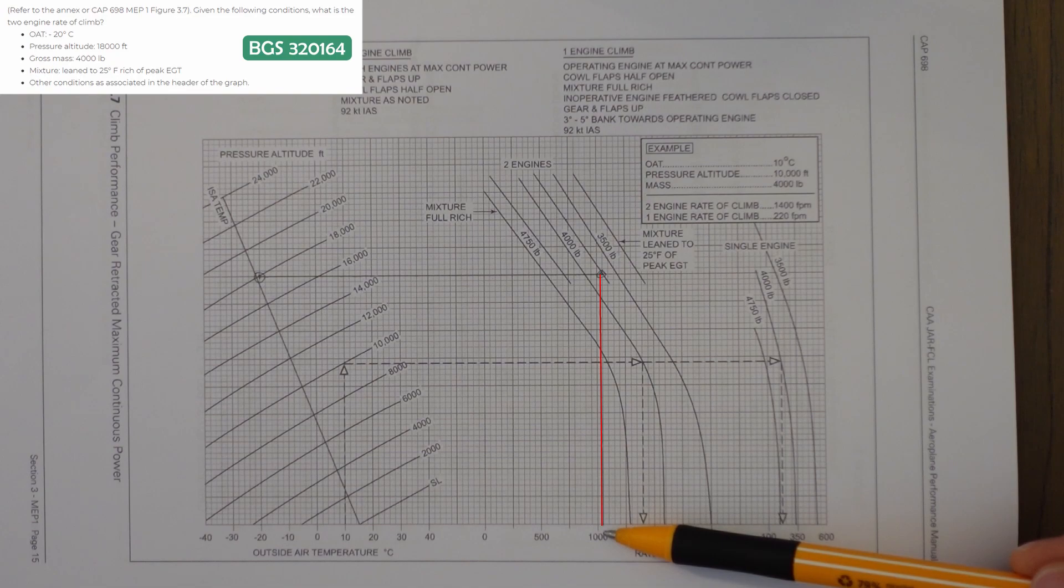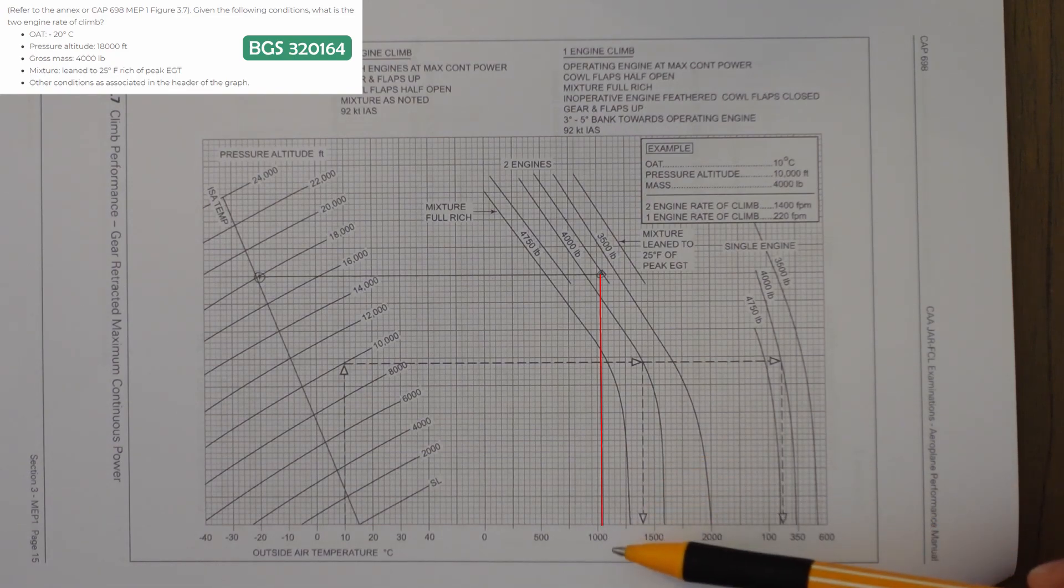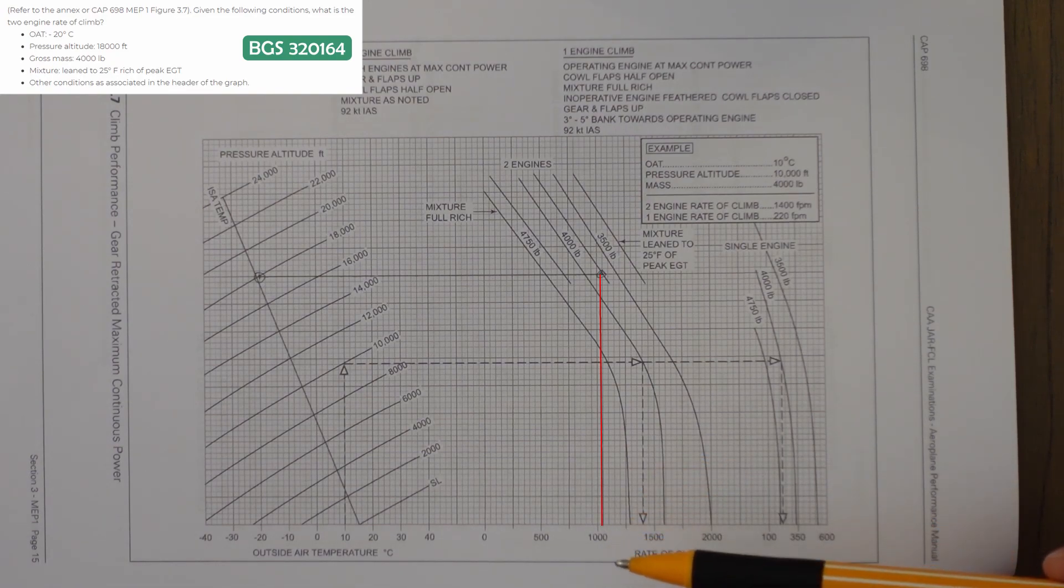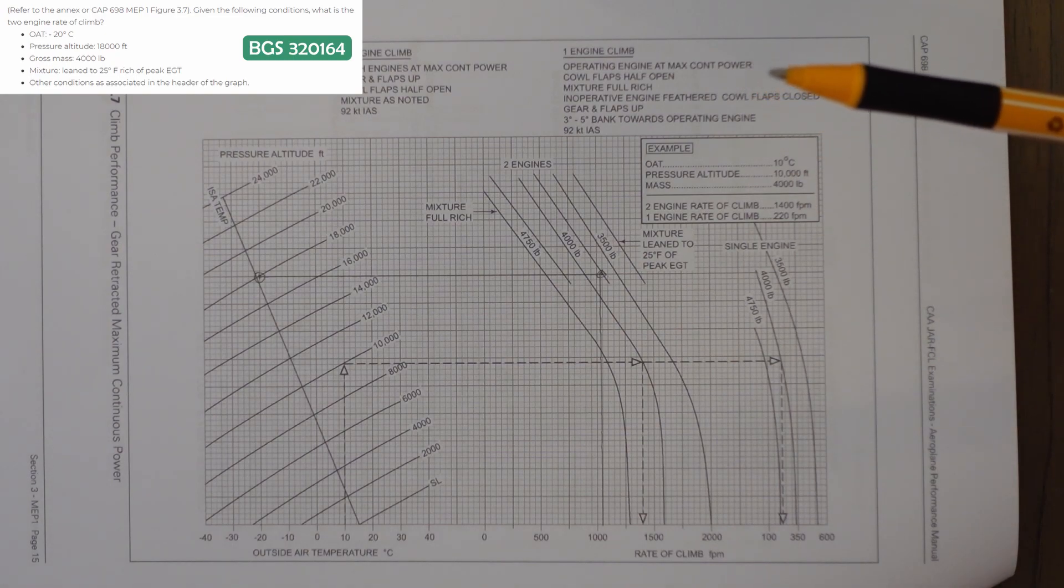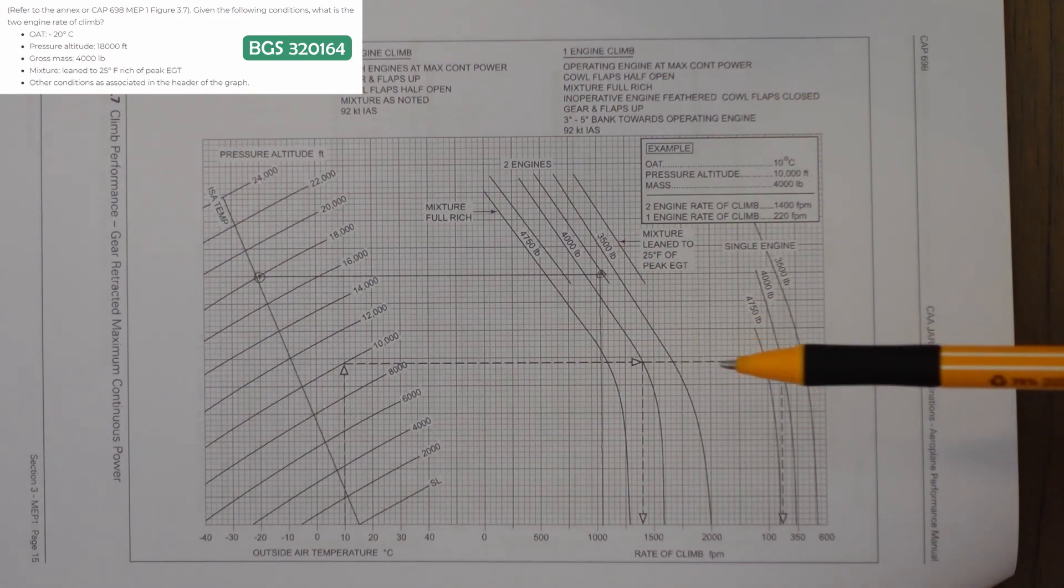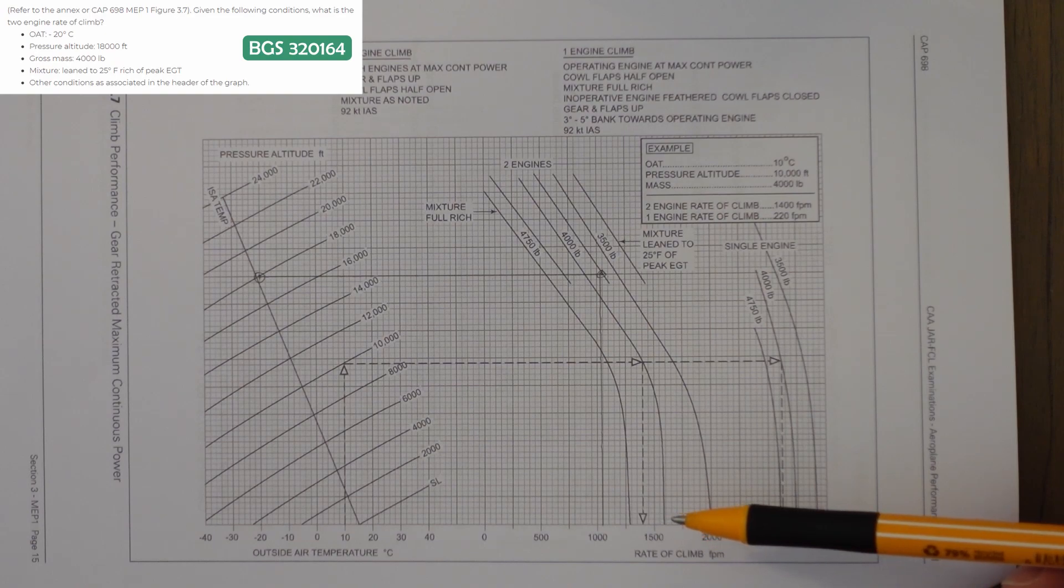Then we're going straight down and we can see that the rate of climb is just over 1,000 feet, probably 1,050 feet. If we have a look at the answers, we can see that the options were 550, 1050, 870, and 1370. So the answer is pretty bang on for this one, it's 1050. Nice and easy, simple marks in the exam.